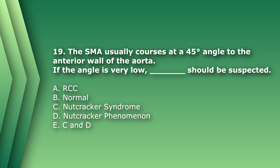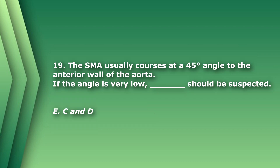Question 20: The superior mesenteric artery usually courses at a 45-degree angle to the anterior wall of the aorta. If the angle is very low, what should be suspected? A) renal cell carcinoma, B) normal finding, C) nutcracker syndrome, D) nutcracker phenomenon, or E) C and D. Renal cell carcinoma has nothing to do with SMA angle, and a very low SMA angle is not normal. The answer is E) both nutcracker syndrome and nutcracker phenomenon. The difference is that the syndrome is accompanied by clinical symptoms, whereas the phenomenon is just anatomical features without clinical symptoms.